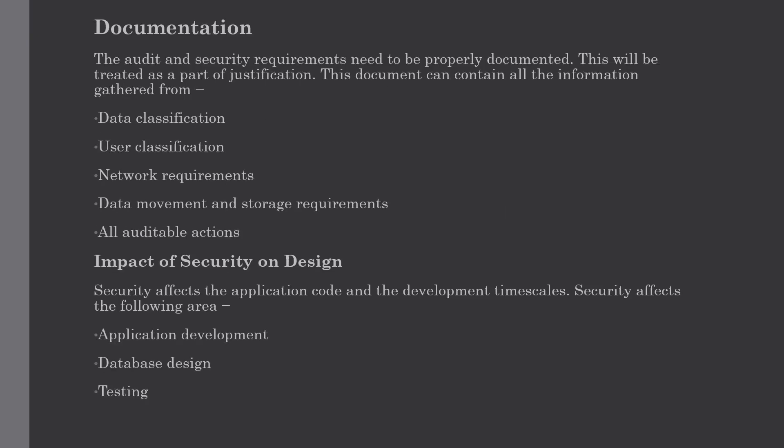The next topic is documentation. The audit and security requirements need to be properly documented as part of the justification process. This document can contain all information gathered from data classification, user classification, different network requirements, data movements, storage requirements, and all auditable actions. This is very important to keep track of while applying security on a data warehouse.